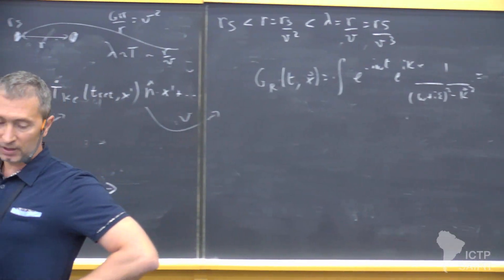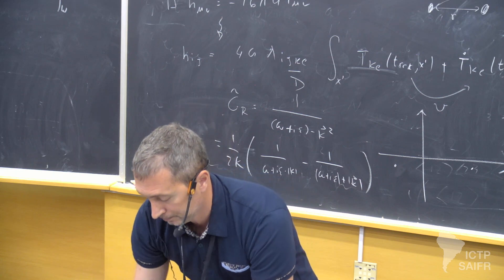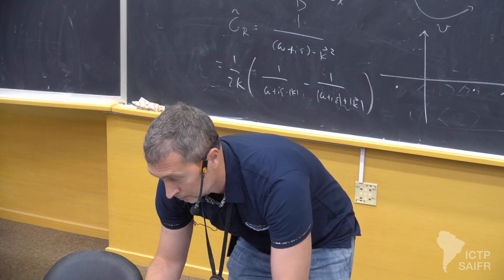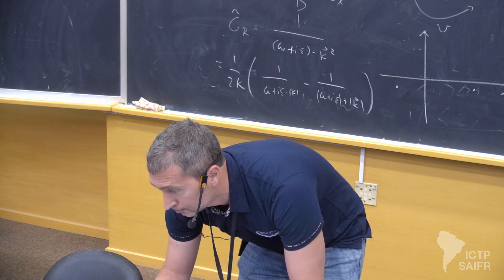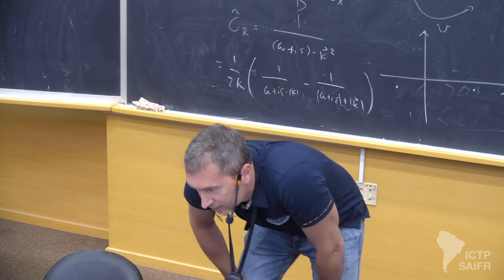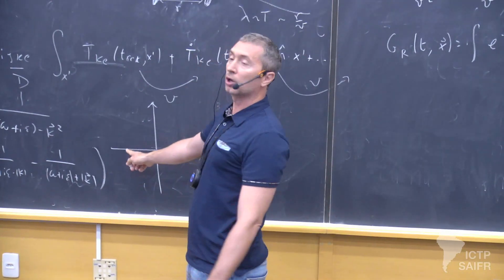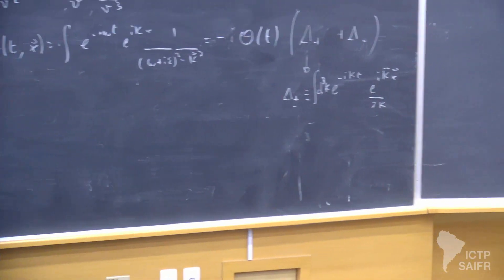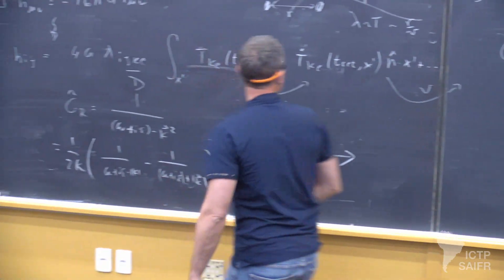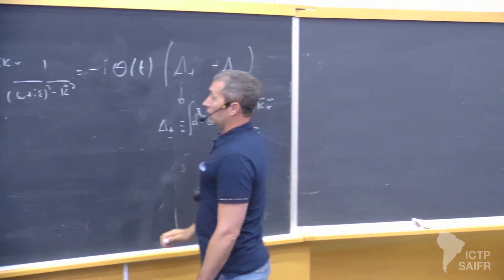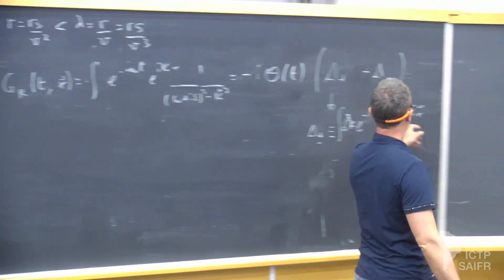You can also write the Feynman Green function in terms of the Wightman functions. The retarded is minus i theta of t times (delta plus minus delta minus), because when you close down you go clockwise so you get a minus. When you pick one pole and then the other, you have a relative minus sign, and you see the 1 over 2k is what remains of the residue of the pole, and then you're left with the remaining integral e to the i k x.